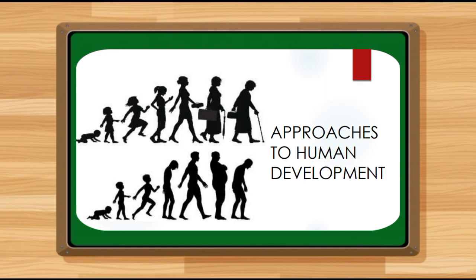As I said earlier, there are two approaches to human development. The first approach is the traditional approach. In the traditional approach, human development shows extensive change from birth to adolescence, little or no change in adulthood, and decline in late old age. Looking at the illustration, the first five images show extensive change from birth to adolescence, while moving towards adulthood and late old age shows little or no change. That approach is called the traditional approach.